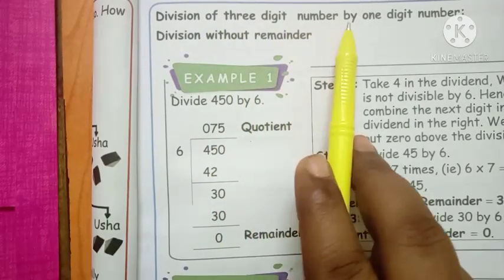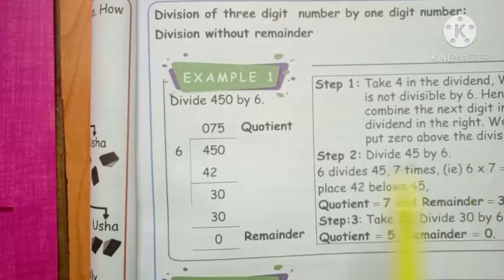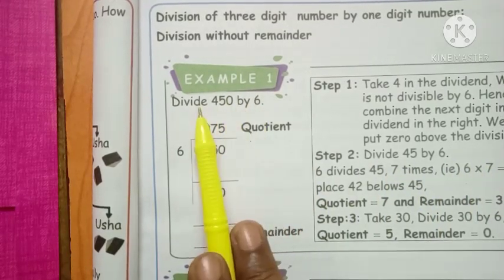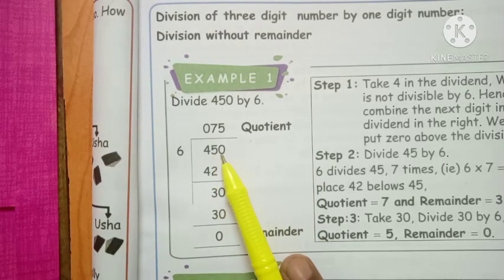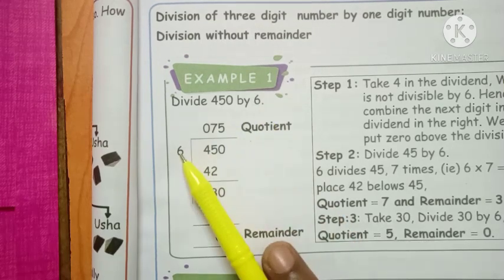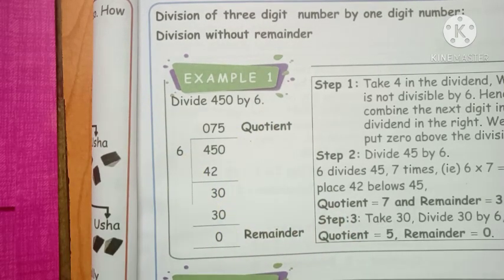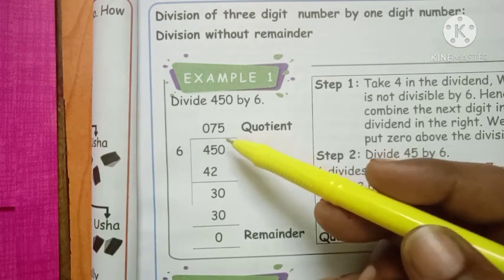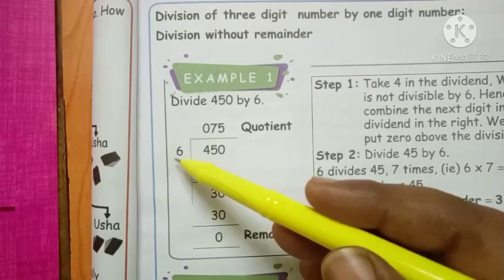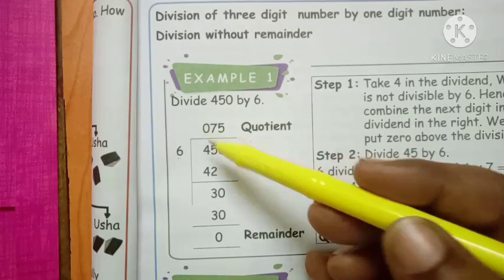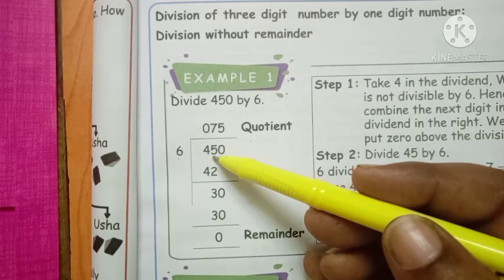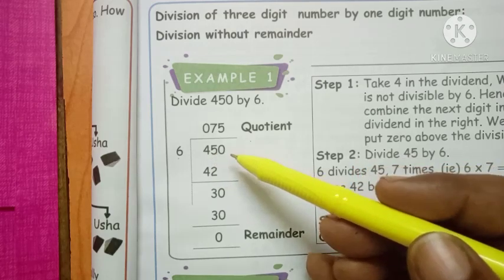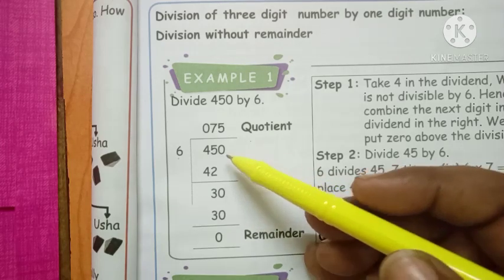Division of a three-digit number by a one-digit number — division without remainder. Divide 450 by 6. First step: write 450, draw the division line, and write 450 in between. 4 is smaller than 6, so put 0 and take both digits: 45. Start the 6 times table before 45.